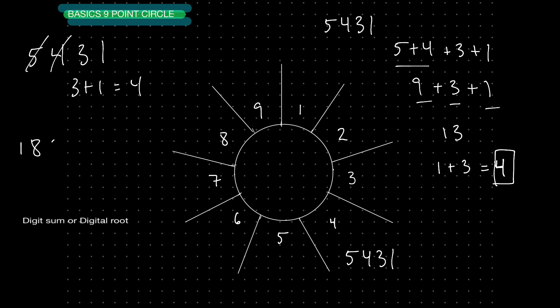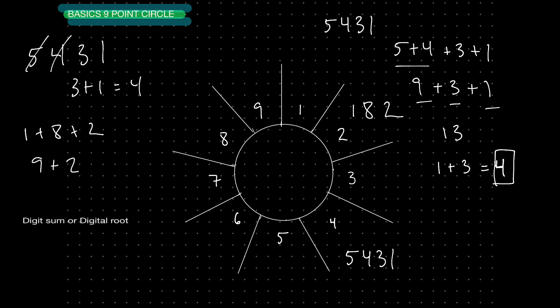So if I have the number 182, I could automatically tell that's going to land me on spoke number 2. Why? Because 1 plus 8 plus 2 — that's 9 plus 2, which is 11. Taking the digital root of 11, 1 plus 1 takes me back to the number 2. Or if I had 182, all I have to do is cross out the 1 and 8 since they add up to 9, and what's left is 2. This is the idea of your 9-point circle.